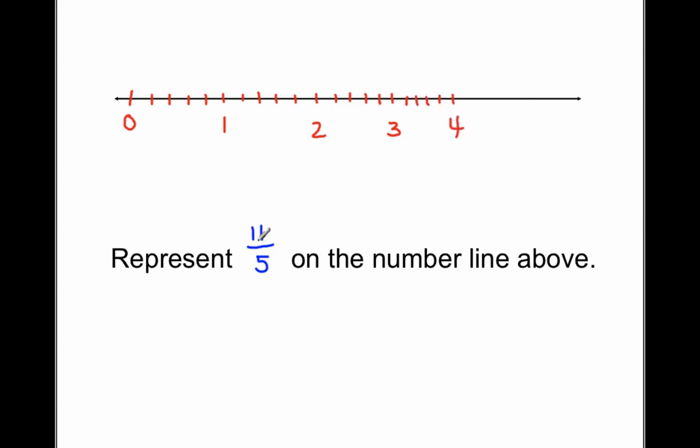And I can keep on going on. However, I want to find the 11th fifth. So the 11th fifth, I could do it one or two ways. I could count each individual tick mark to get to 11. Let me try that method first. Start at zero. One, two, three, four, five, six, seven, eight, nine, ten, eleven. So 11 fifths is right there.